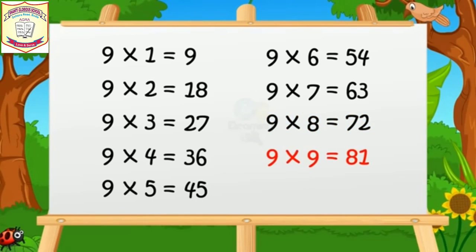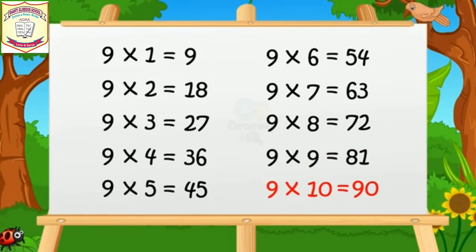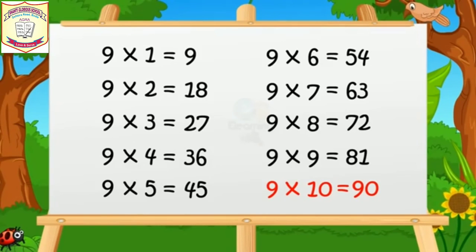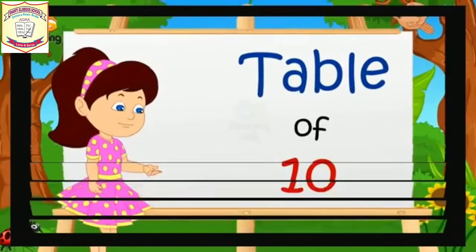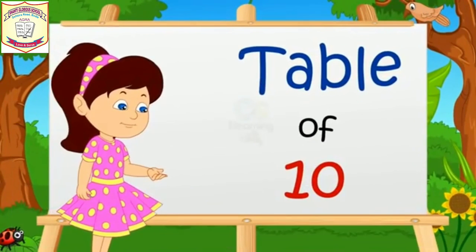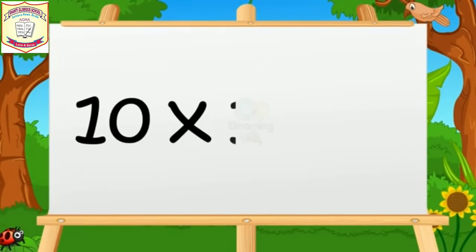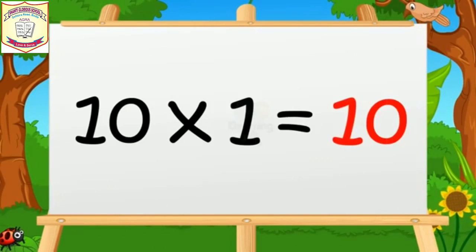Nine eights are seventy-two. Nine nines are eighty-one. Nine tens are ninety.